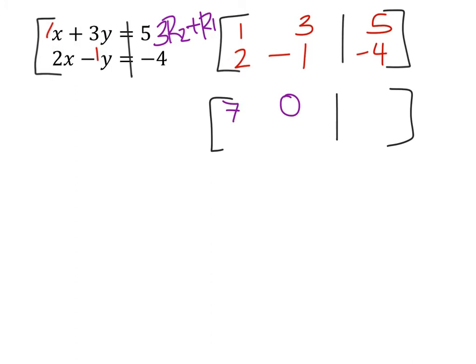Next thing we'd want to do is to get a 0 where the 2 is on the second row here. So we want this to be a 0. What are we going to do? Well, we need to compare that to row 1 and we can see row 1 is 1.